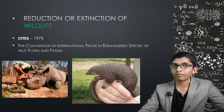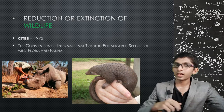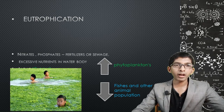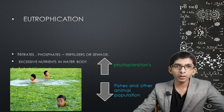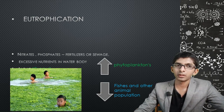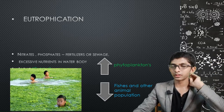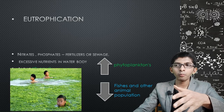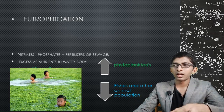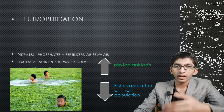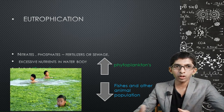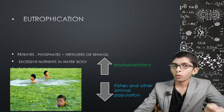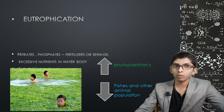Eutrophication refers to excessive nutrients entering water bodies. For example, fertilizers containing nitrates and phosphates from agricultural canals enter rivers and ponds. This leads to an excessive buildup of nutrients in the water.